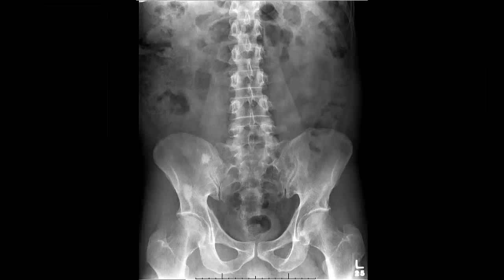Let's go over a basic approach to reading abdominal radiographs. We'll start with this patient here and look at supine and upright views of the abdomen. I'll go over my general approach and try to keep it simple without overwhelming you with details. The first thing we'll take care of is the most common indication these are obtained for, which is going to be obstruction — that's going to require evaluation of the bowel gas pattern.